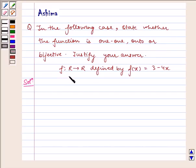We have function f from R to R defined by f(x) = 3 - 4x. Now let us write the solution. Given to us is this function f from R to R defined by f(x) = 3 - 4x.